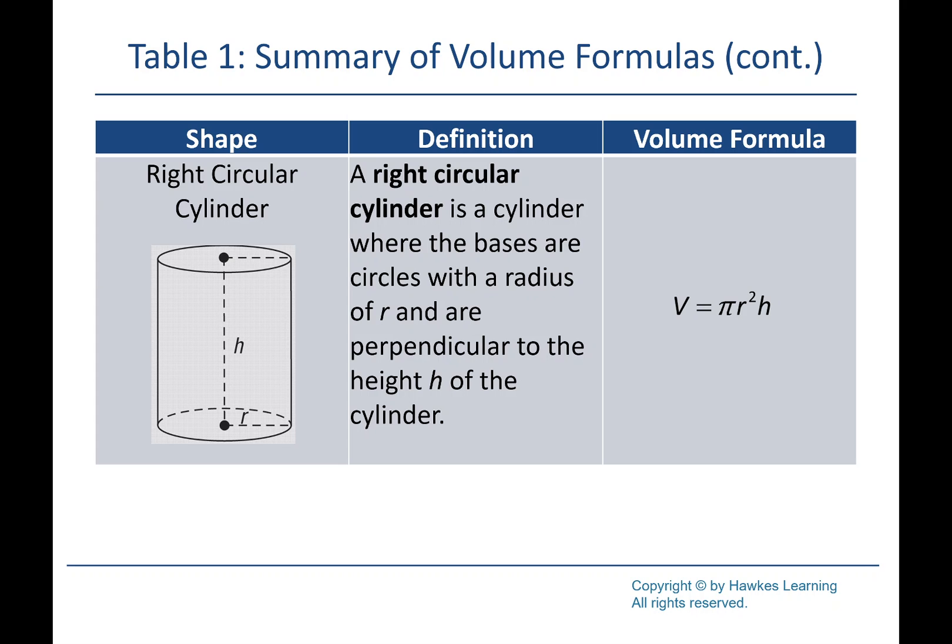We also have a cylinder — our textbook calls it a 'right circular cylinder,' which is what we typically mean when we say cylinder, like a can of soup. For volume, we're adding one dimension to the circle: pi r squared times the height. The pi r squared part is the area of the circle on the end, and then we multiply by the height.